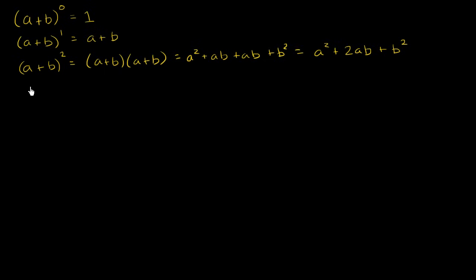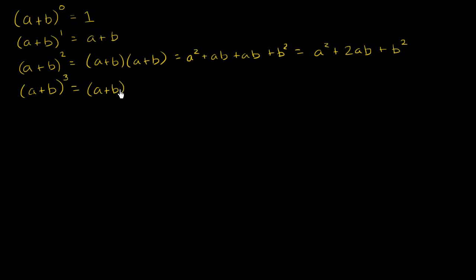Now things are going to get a little bit more interesting. What is a plus b to the third power going to be equal to? I encourage you to pause and try to figure that out on your own. Well, we know that a plus b to the third power is just a plus b squared times another a plus b, so let's just multiply this out to figure out what it is.